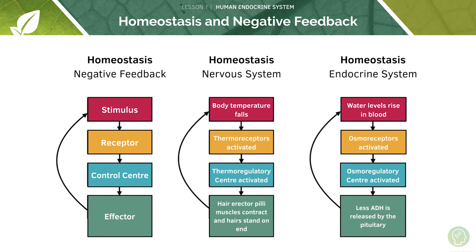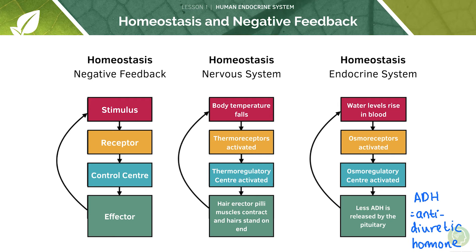In the endocrine system, we look at ADH which stands for anti-diuretic hormone, which we'll cover more in a subsequent tutorial. When water levels rise in the blood, your osmoreceptors are activated, detecting this rise. Your osmoregulatory centre is then activated and this causes less ADH to be released by the pituitary gland. ADH is anti-diuretic hormone, meaning it causes retention of water in the body. With less ADH released, more urine is produced and therefore water levels decrease. This is another example of negative feedback — a deviation from the normal water level set point leads to more urine production via decreased ADH, returning water levels back to normal.